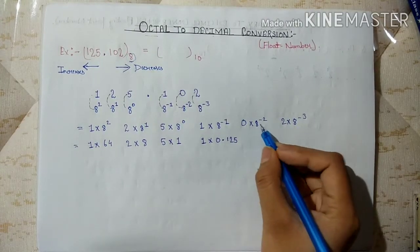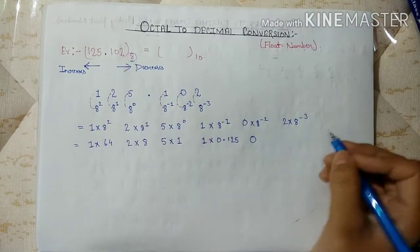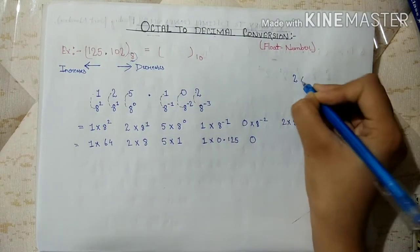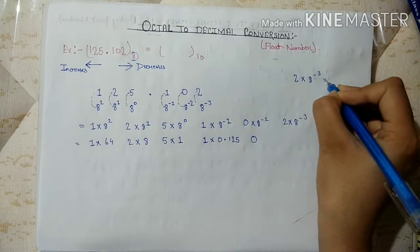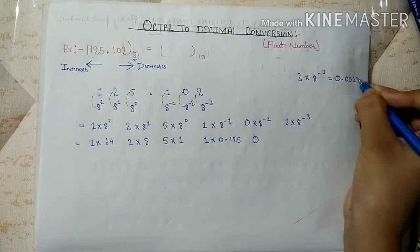Here, 0 into any number is 0, and 2 into 8 to the power minus 3, that is 0.00390.